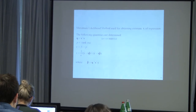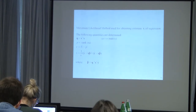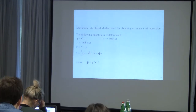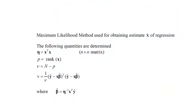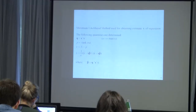We can use the maximum likelihood method to obtain the best estimates of the parameters. A matrix eta is defined as the transpose of x times itself. P is the rank of x, U is the number of observations minus p, and a parameter B is calculated using the best estimate of beta from maximum likelihood. All this follows from using the maximum likelihood method on the linear regression model.